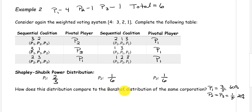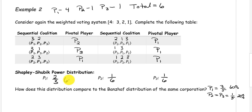How does this distribution compare to the Banzhaf distribution of the same system? Here I have listed the Banzhaf distribution that we got in an earlier video. Player 1 had the index 3 fifths, which is exactly equal to 60%, and players 2 and 3 were 1 fifth, which is 20%. The reason I have the percents is that it's easier to compare percents than fractions. 2 thirds gives you approximately 67% if we round to the nearest whole percent. 1 divided by 6 gives you approximately 17%.